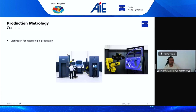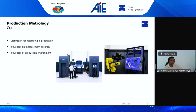The content will cover: first, what the motivation is for measuring directly in a production environment; second, the influences on accuracy when measuring in production — such as vibration and temperature variation — and how we can compensate or reduce them; and then I'll show a few examples of production methodology concepts and how we can implement Zeiss products directly into the production hall or production line.